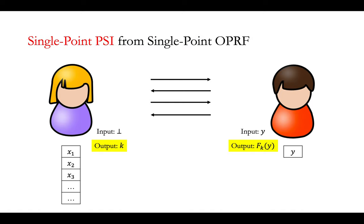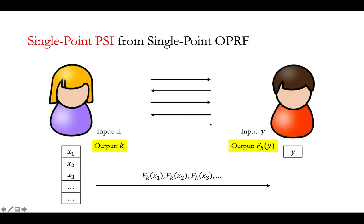Given this primitive, we can construct a single-point PSI where Alice has a set of elements while Bob has a single element Y. To achieve the single-point PSI, the two parties first run the single-point OPRF, and then Alice will evaluate the PRF on every element in her set and send all the PRF values to Bob. By comparing these PRF values with the PRF value F_K(Y), Bob can easily tell whether Y is in the set X or not.